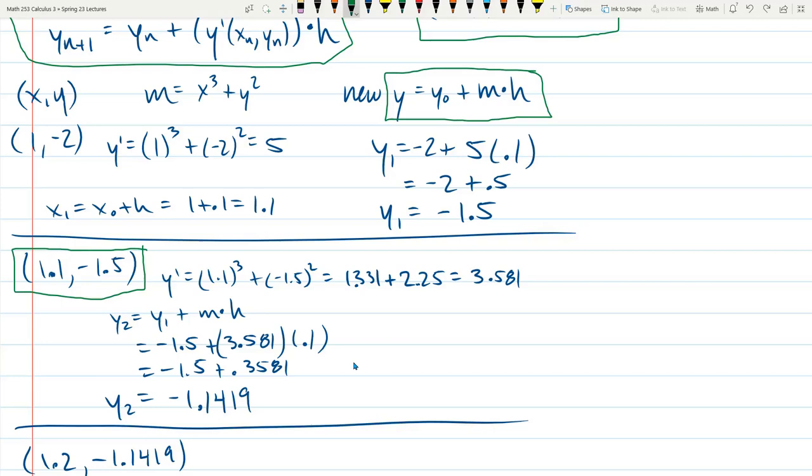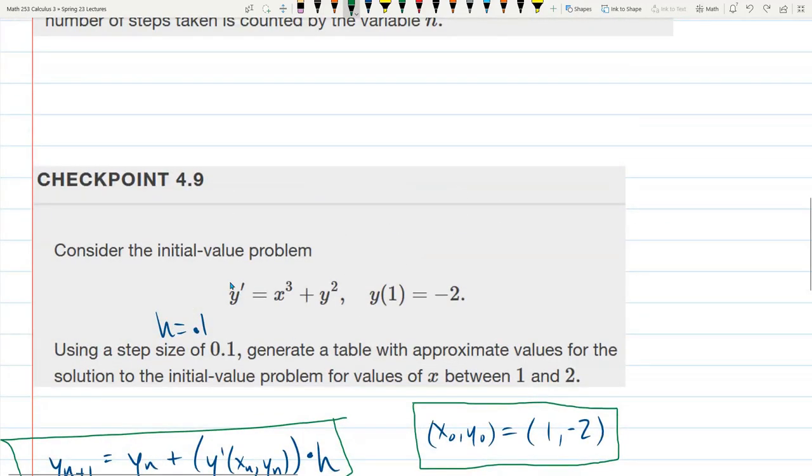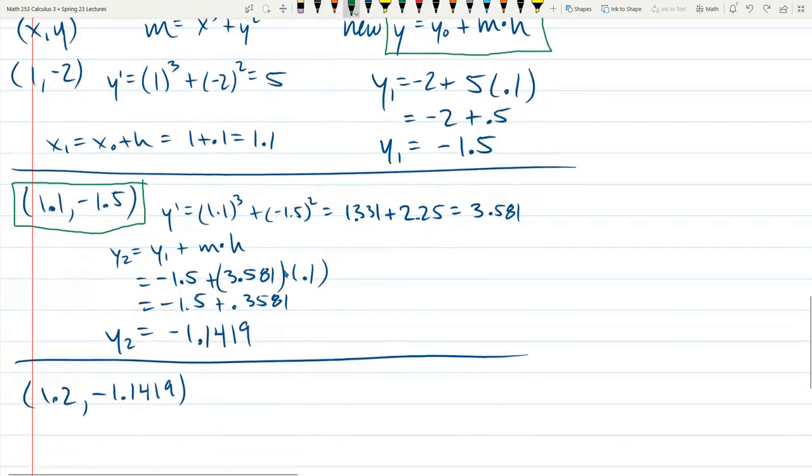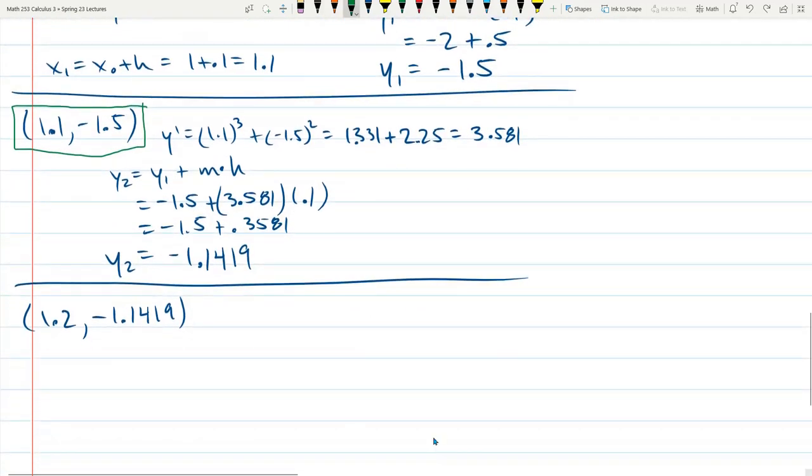So how long do we need to do this for? We're starting from x is 1, and we're going 0.1 each iteration. So we need to do 10 iterations to get all the way to 2. So we have to do quite a bit of this. And as you can see, it's going to get tedious. So I stopped doing it right here. But I think you probably could work this step out. So what I did instead is I used Excel.